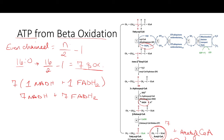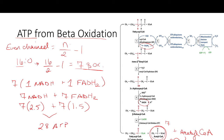From the electron transport chain, each molecule of NADH generates 2.5 molecules of ATP on average, and each FADH2 generates 1.5 molecules of ATP. So from beta oxidation alone: 7 × 2.5 plus 7 × 1.5 gives us 28 molecules of ATP from beta oxidation.